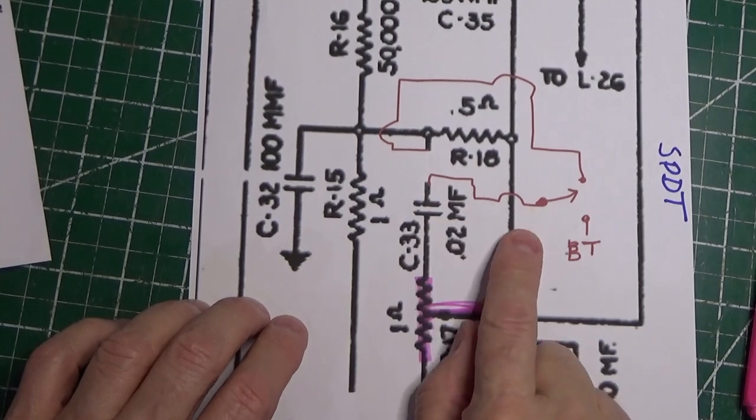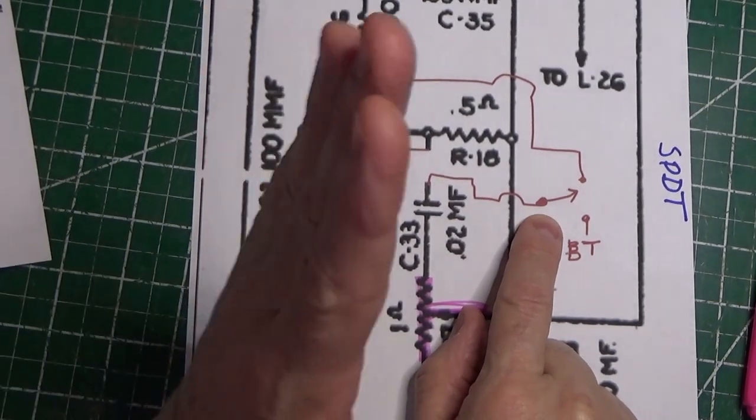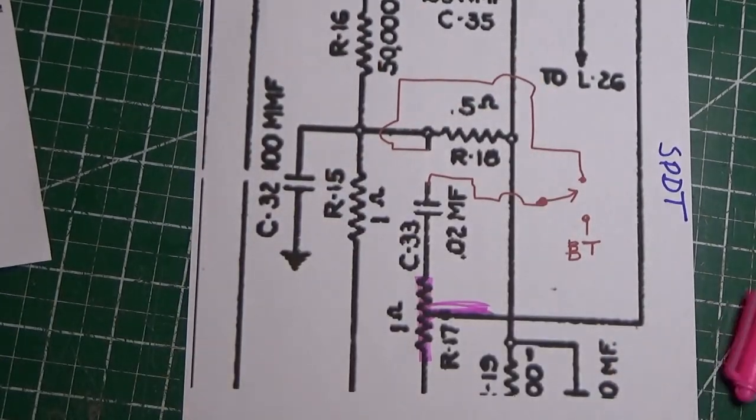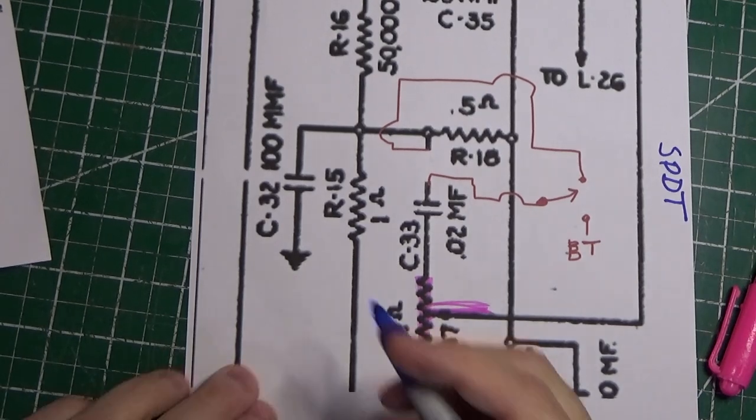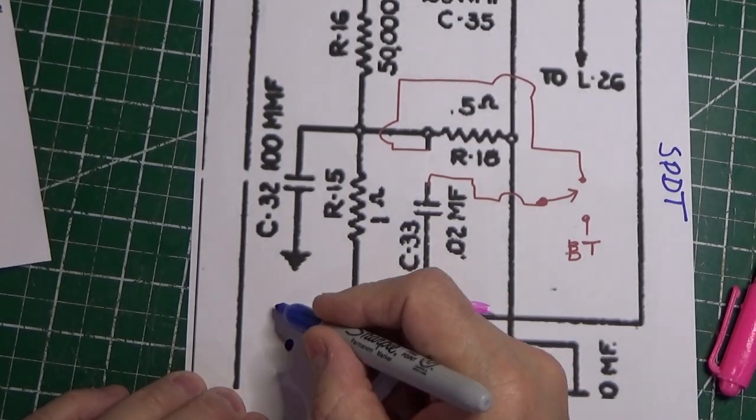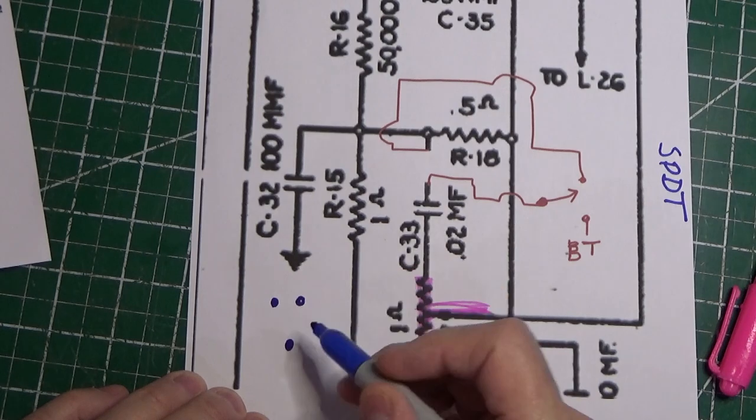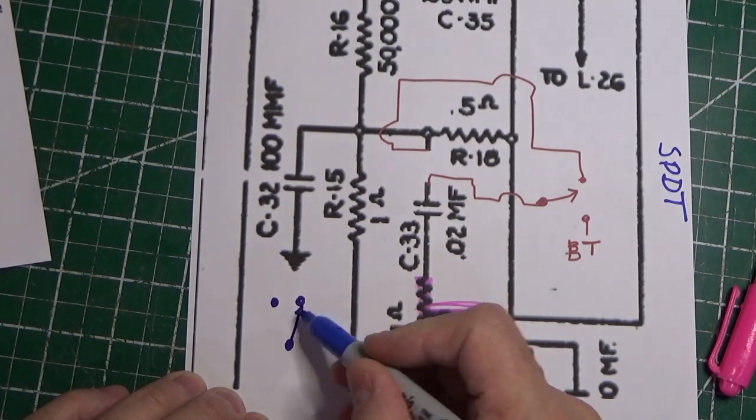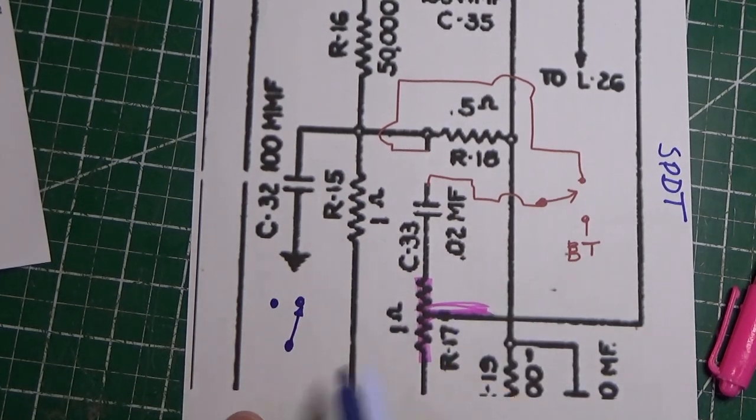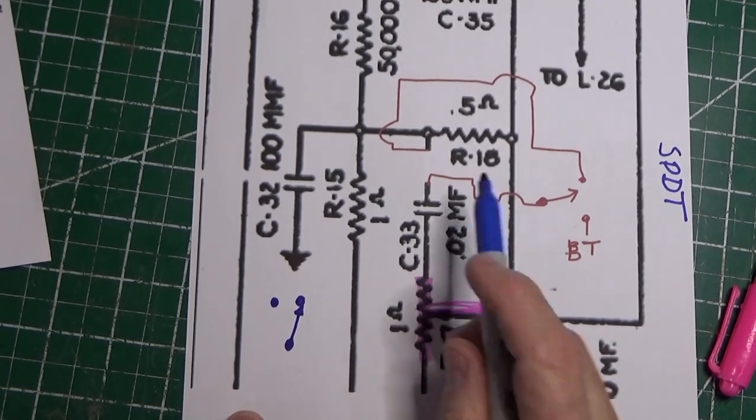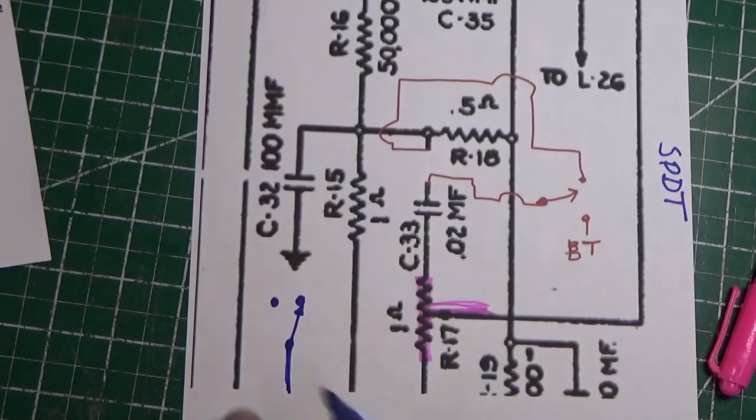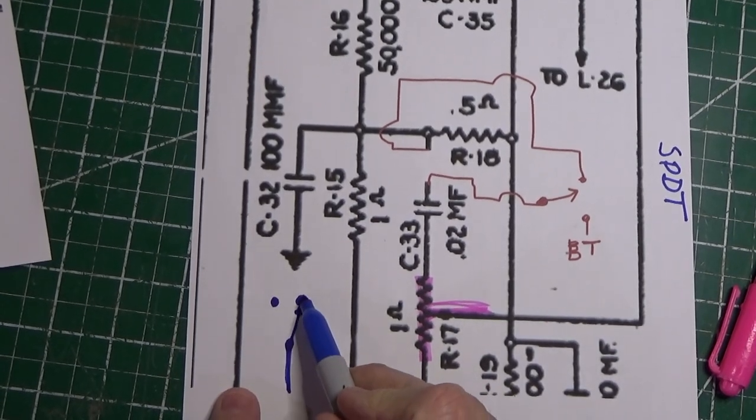So what you want to do is you want to break that connection and you're going to connect one side of it to the common part of the switch, the single pole double throw. The single pole double throw switch looks like this, and this goes like this and like this. You want to connect the end of that capacitor to the common part of the switch, this side of the switch.